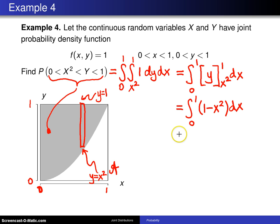Now, when you integrate 1 minus x squared, that will be x minus x cubed divided by 3, evaluated from 0 to 1. And that will be 1 minus 1 third, which is 2 thirds minus 0. So this probability is 2 thirds.